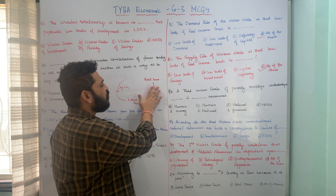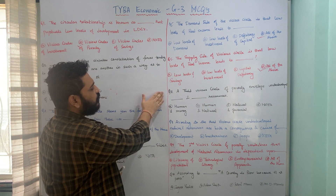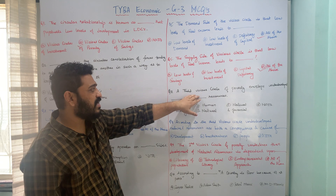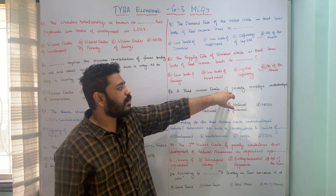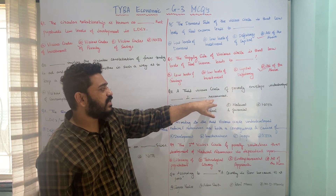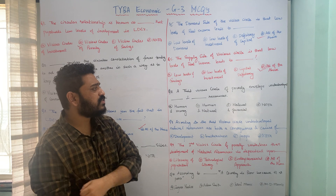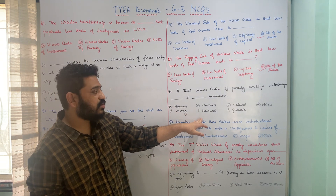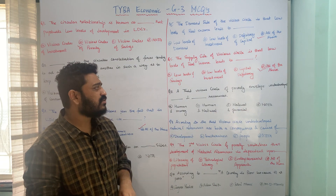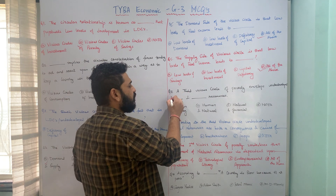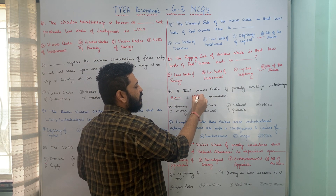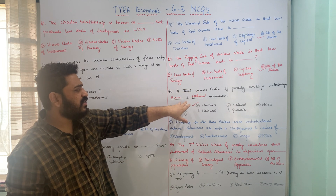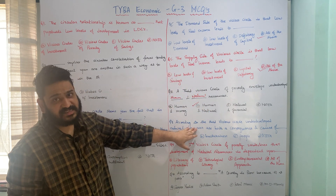We have seen the demand side and the supply side of the vicious circle, but there is a third vicious circle which exists. The question is: a third vicious circle of poverty envelopes underdeveloped dash and dash resources. Options: A — human and money resources; B — human and natural resources; C — human and financial resources; D — none of the above. The correct answer is option B — the third vicious circle envelopes underdeveloped human and natural resources.